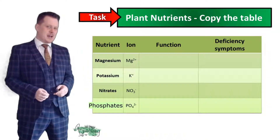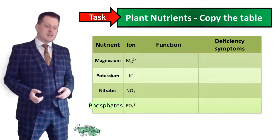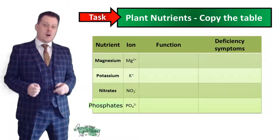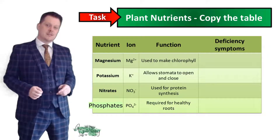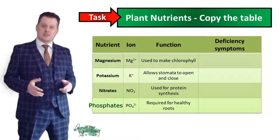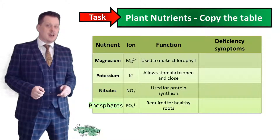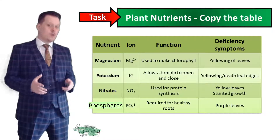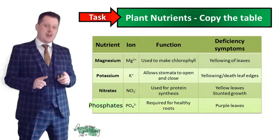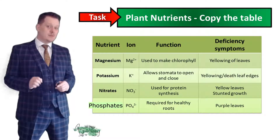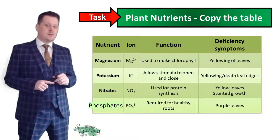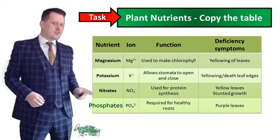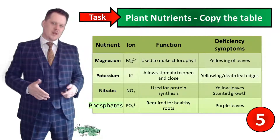Let's make sure we haven't missed anything from our table. The ions: magnesium is Mg2+, potassium is K+, nitrates is NO3-, and phosphates are PO4-. Functions: magnesium is used to make chlorophyll, potassium allows the stomata to open and close, nitrates are used for protein synthesis, and phosphates are needed for healthy roots. Deficiencies: magnesium causes yellowing of the whole leaf; potassium causes yellowing at the edge of the leaf and eventually the edge begins to die; nitrates cause yellow leaves and stunted growth; and phosphates cause purple leaves. I'll leave this on screen for five seconds — pause if you need more time.